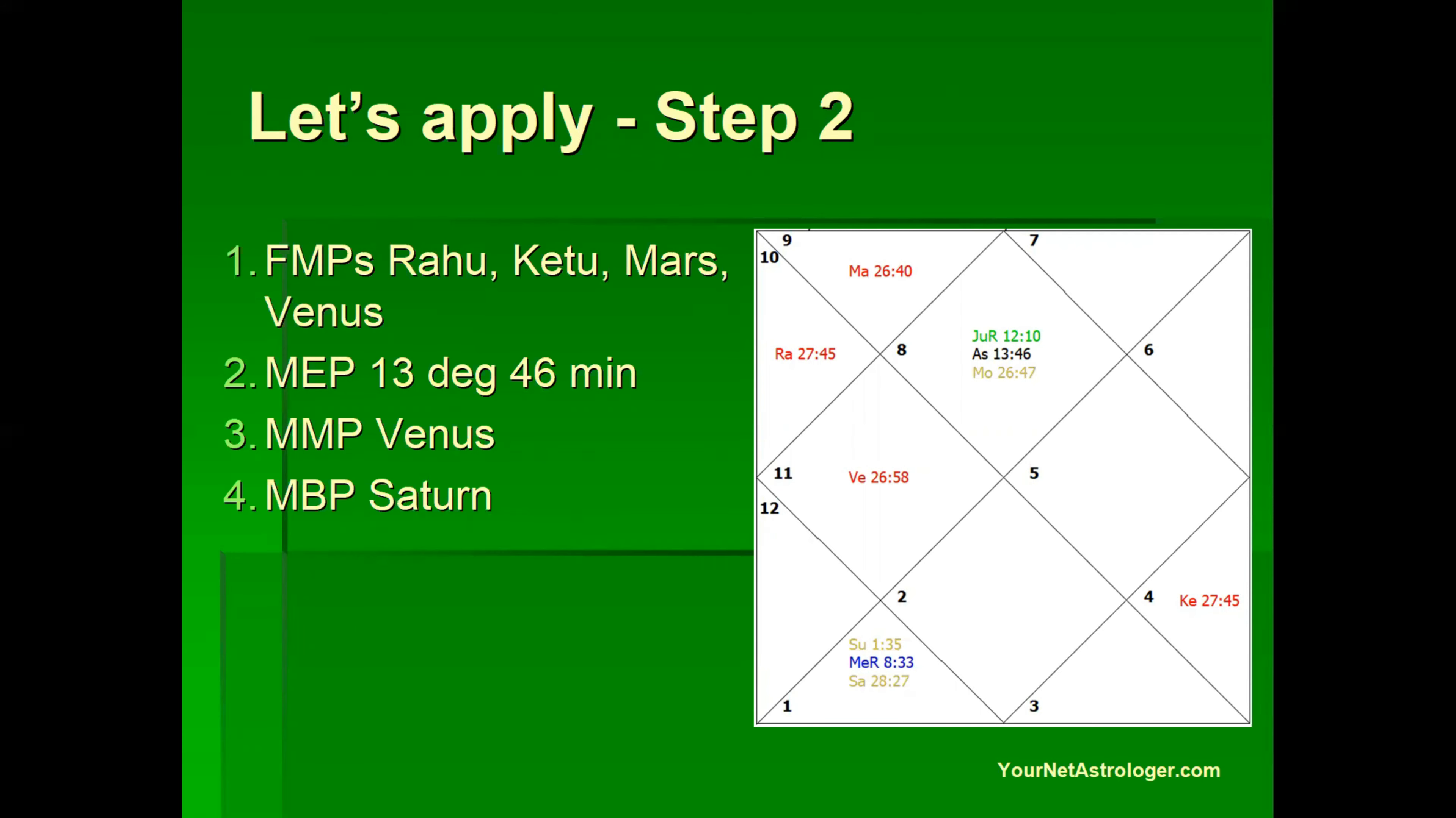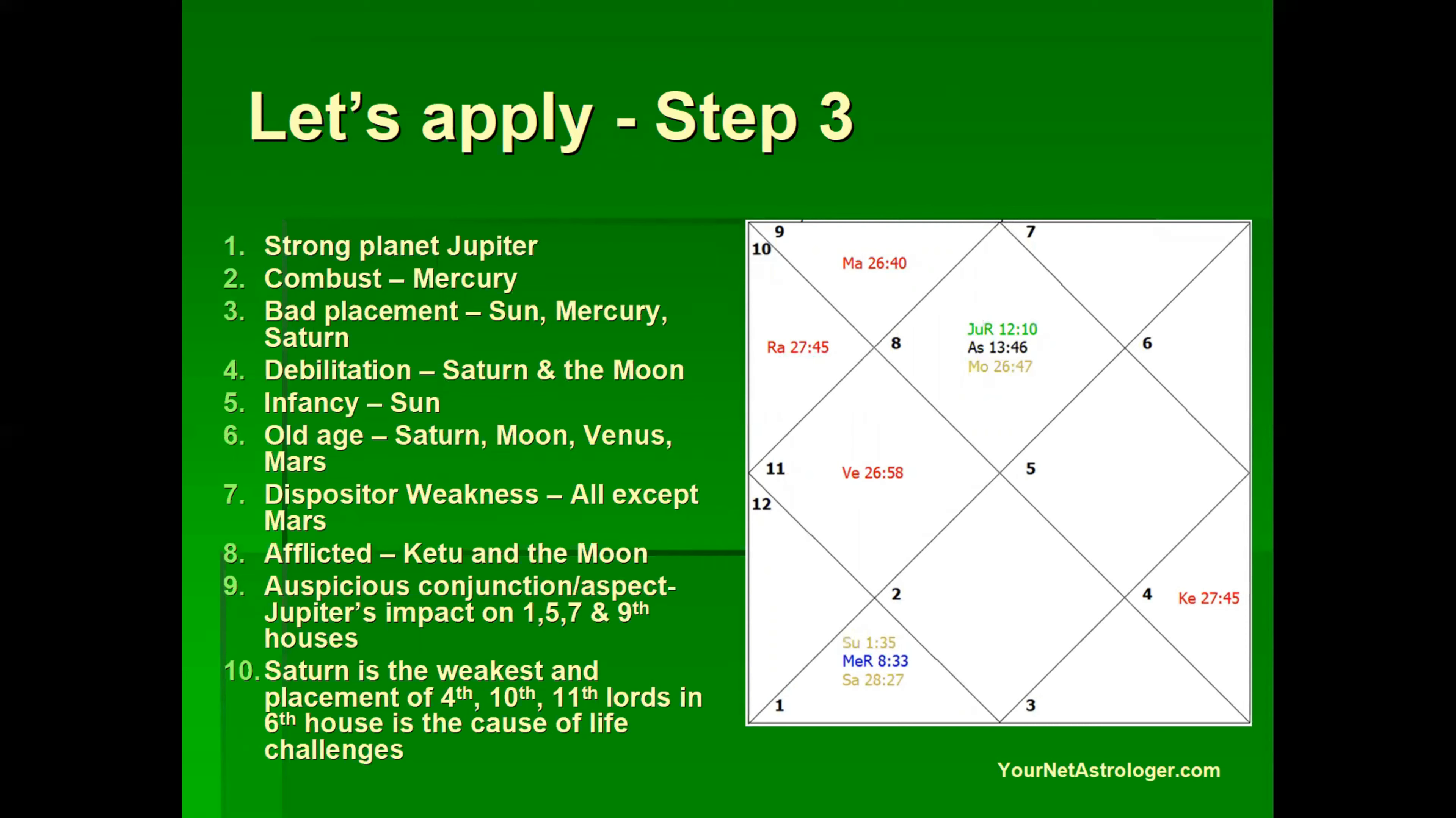Now let's move to step three. In step three we analyze the strength and weaknesses and mutual relationship of planets. Here we see that Jupiter, the lord of second house, is placed in the ascendant and is very strong and placed very close to the most effective point. So it aspects fifth, seventh and ninth houses positively. Mercury is placed in combustion and Sun, Saturn and Mercury all three planets suffer from bad placement in the sixth house.